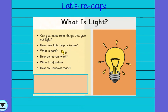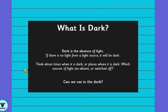How does light help us to see? What do you think dark is? Those are the important things for the start. Now then, dark — we talked about dark last week. Dark is the absence of light. So dark is when there is absolutely no light source whatsoever. Think about times when it's dark or places where it's dark. What light sources are absent or switched off?